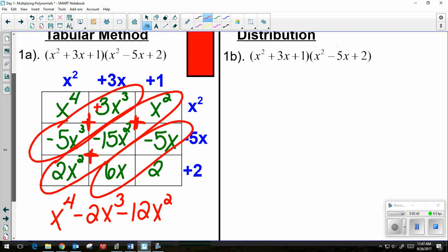And then I have a 6x plus a negative 5x, which gives me positive 1x. And then I have my plus 2 on the outside.